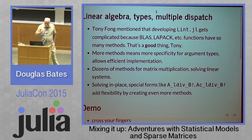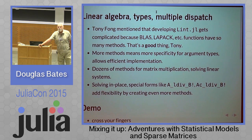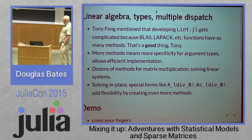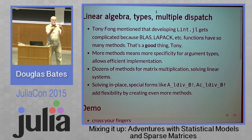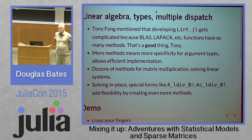Tony Fong mentioned that developing Lint gets complicated because of all these methods to do with linear algebra. And that's a good thing, Tony — we want that. You get specificity of arguments by doing that, and you can customize the methods to the particular arguments.